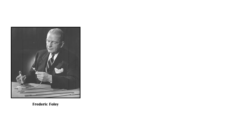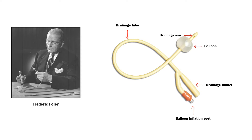The Foley catheter was originally introduced by the American urologist Frederick Foley nearly 80 years ago. It has the following parts: a drainage tube to drain urine, a drainage funnel to attach the urine collecting bag, and a balloon at the end of the catheter to be inflated with sterile water from a syringe, to retain the catheter within the bladder.